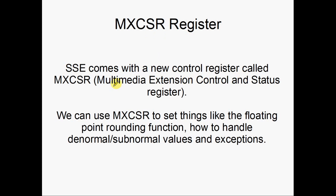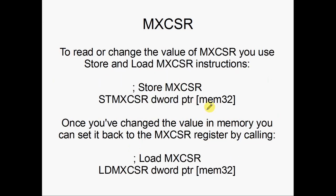MXCSR — SSE comes with a new control register called MXCSR, the Multimedia Extension Control and Status Register. We can use it to set things like the floating point rounding function and handle sub-normals — those are tiny values really close to zero — and exceptions. To read or change the value of MXCSR, you store it to memory, load it into x86 registers like RAX or RBX, change the values, store it back to memory, and load it back into the MXCSR register. It's long-winded and not quick, but that's what you have to do.